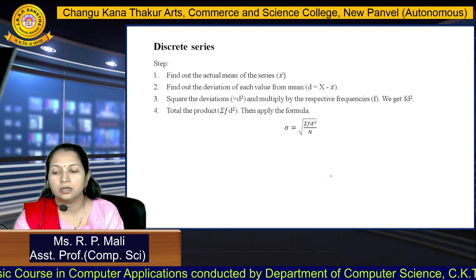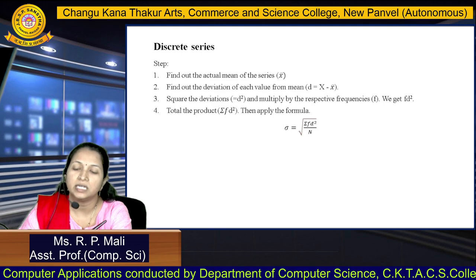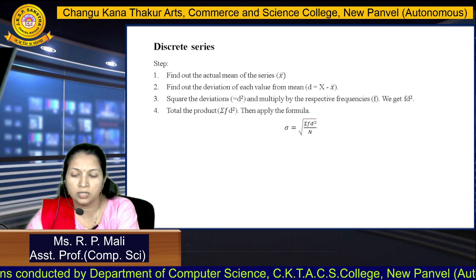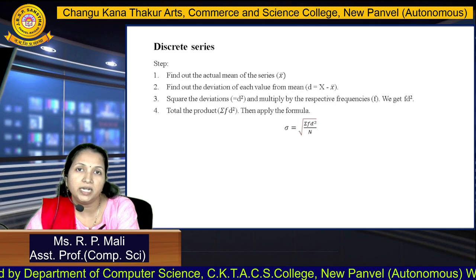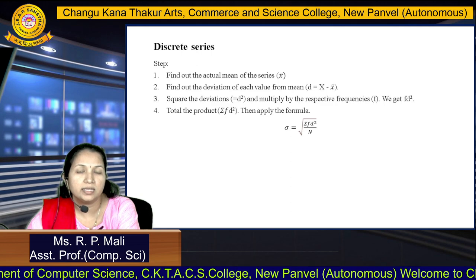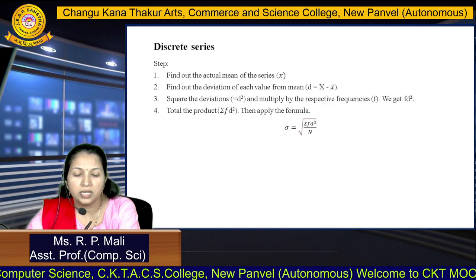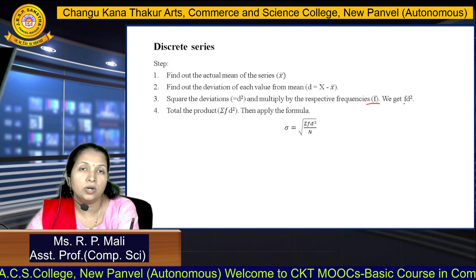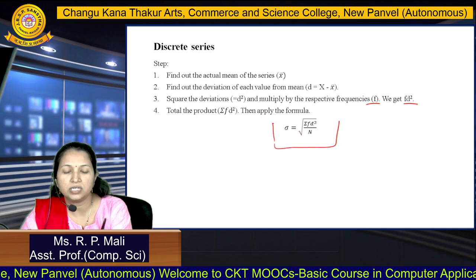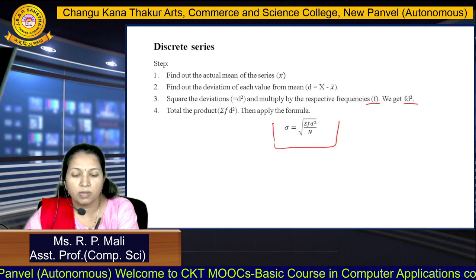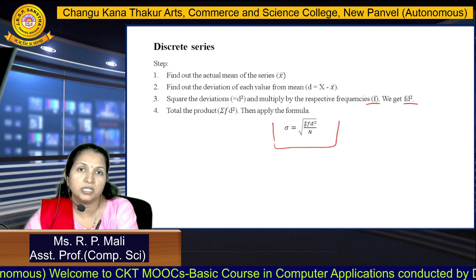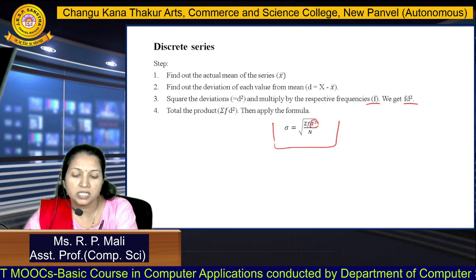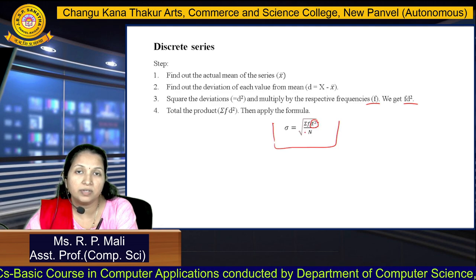Now we find the standard deviation for discrete series. The steps are: find the actual mean; find the deviation D = X − X̄; square the deviation to get D²; then multiply D² by the frequency f to get fD². The formula is σ = √(ΣfD²/N).